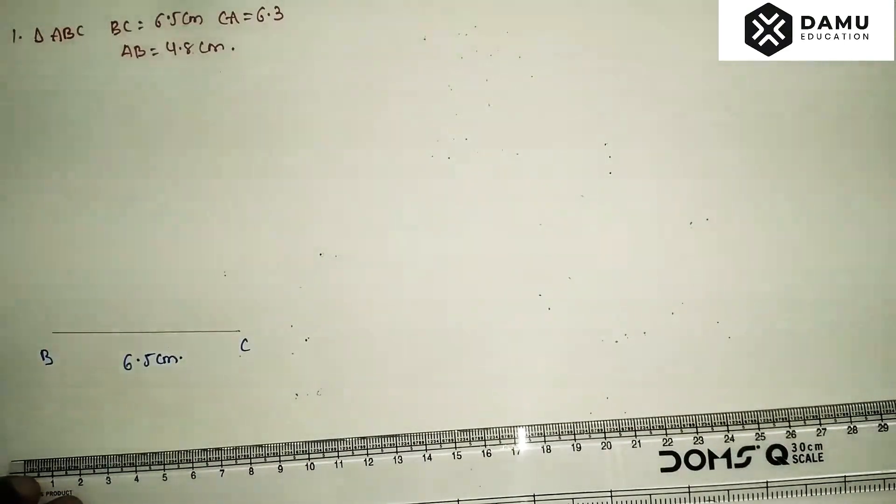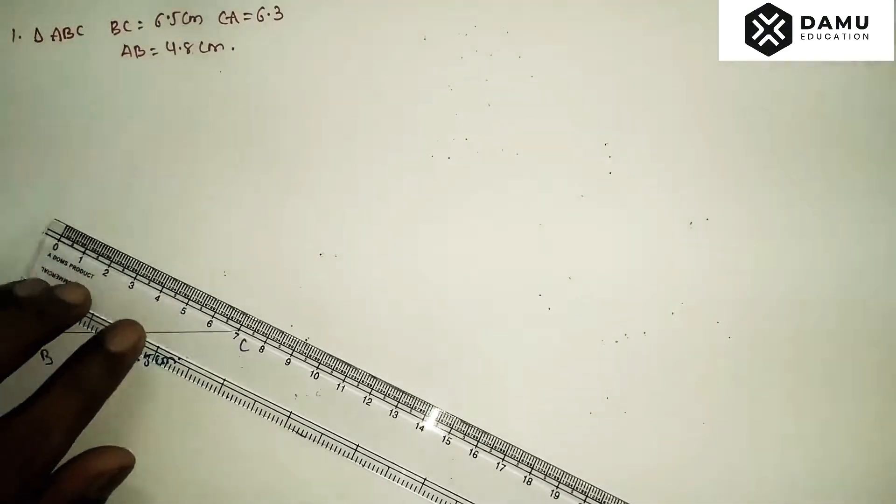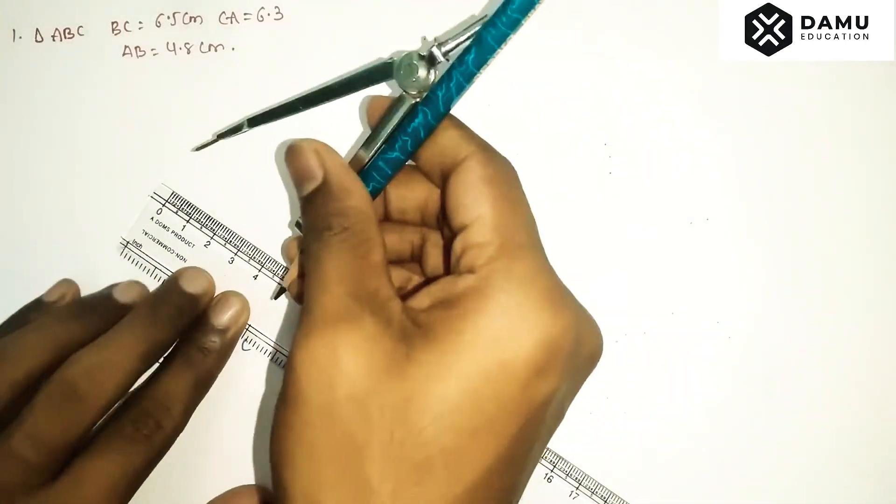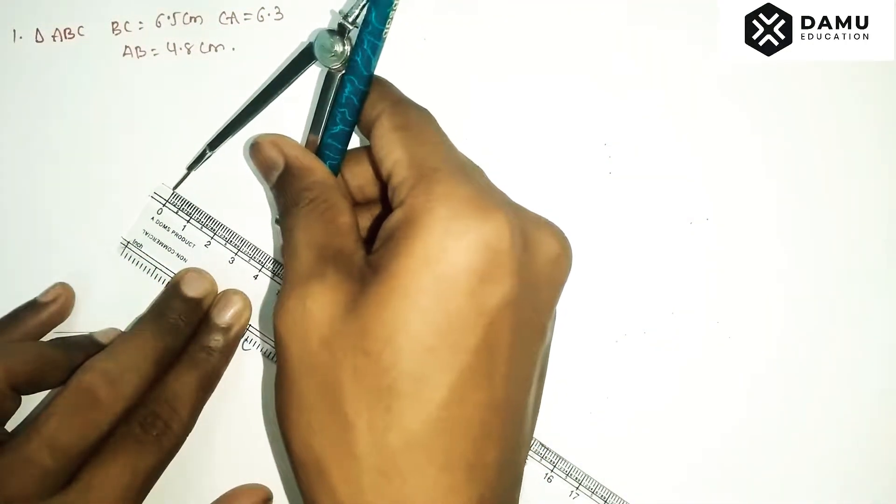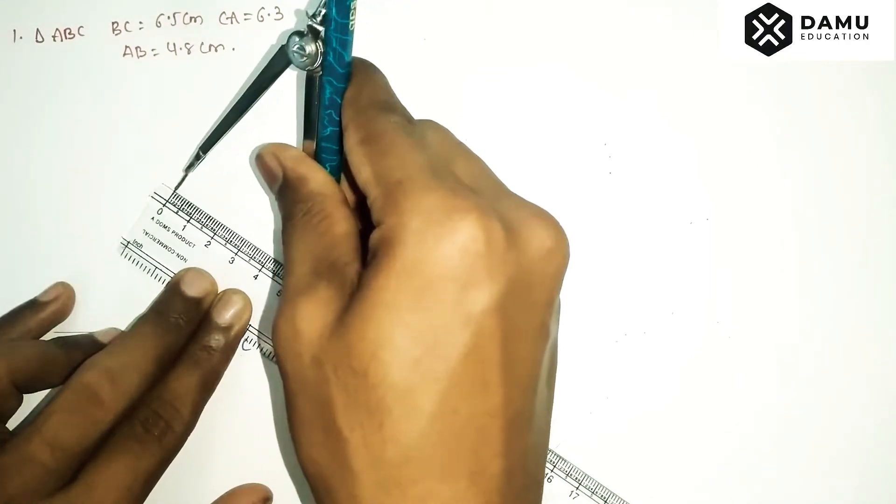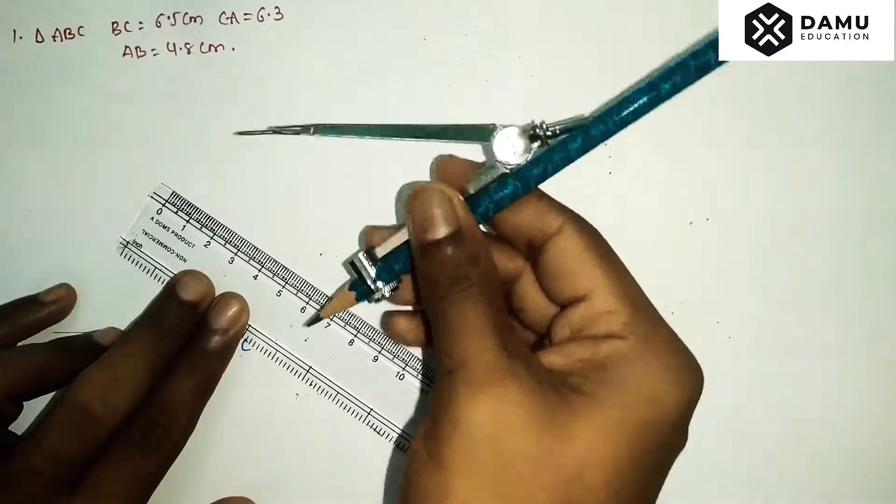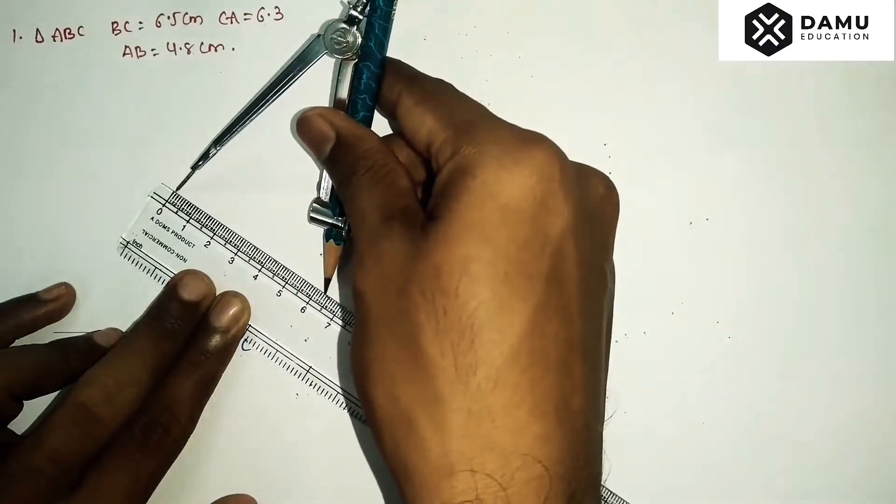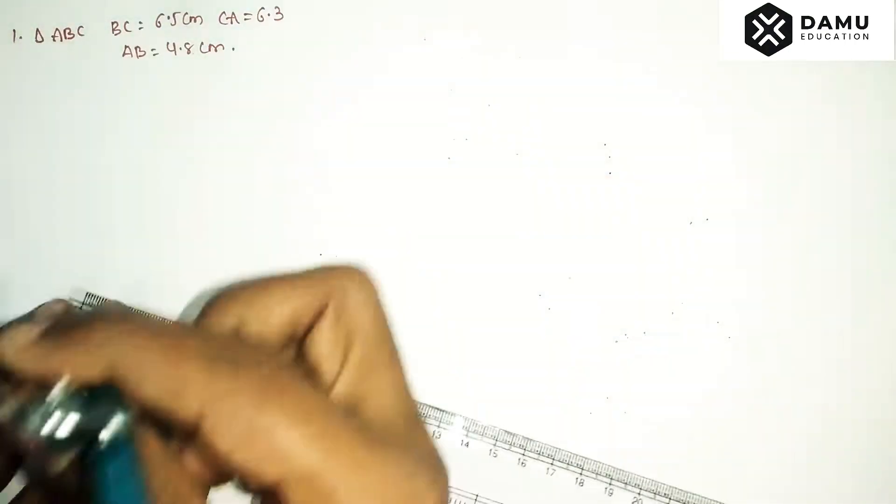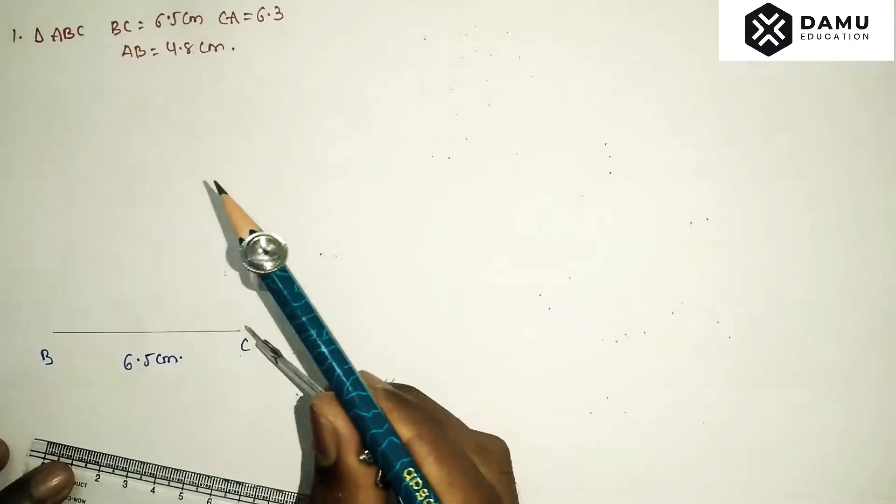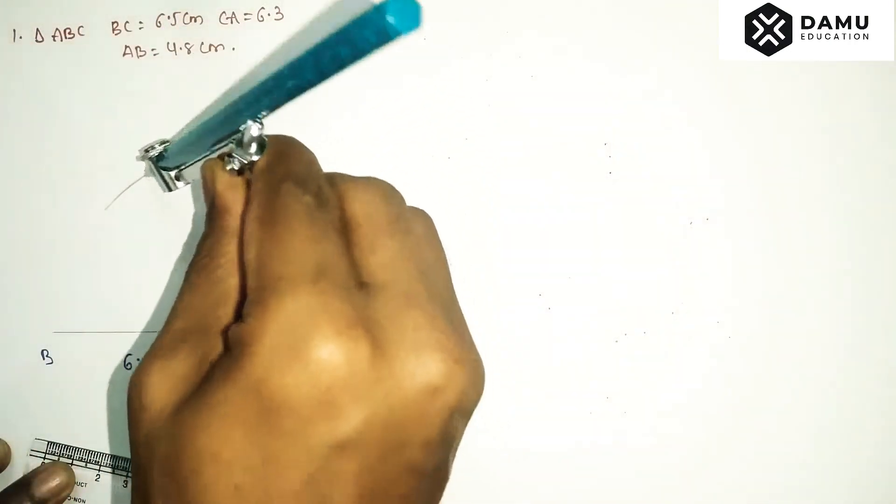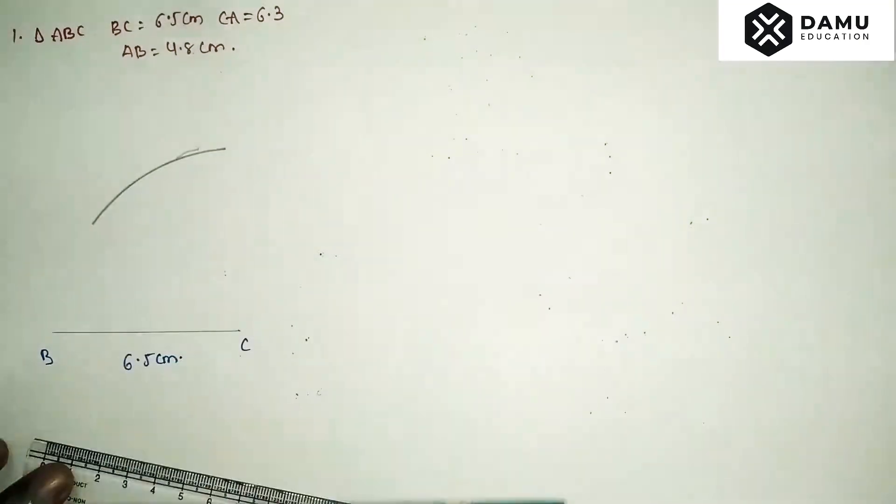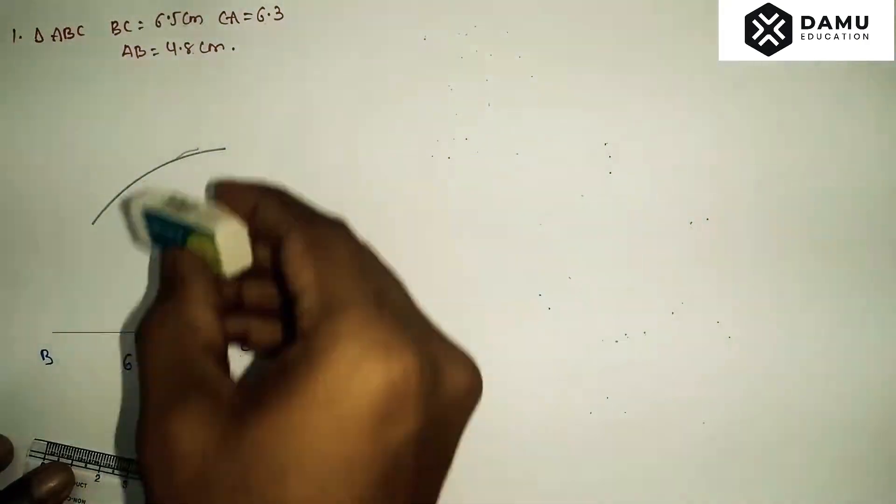Then CA. Take your compass at 0 and drag it over to 6.3 cm. If you measure this you will get 6.3 cm. Then with C as the center, draw an arc with radius 6.3 cm.